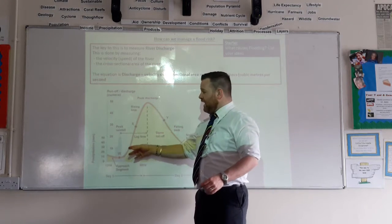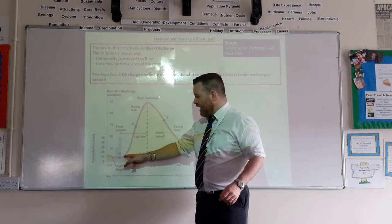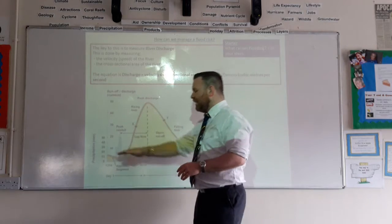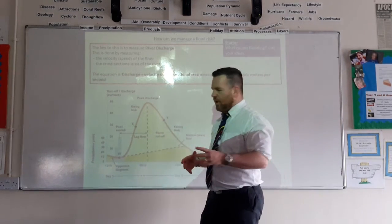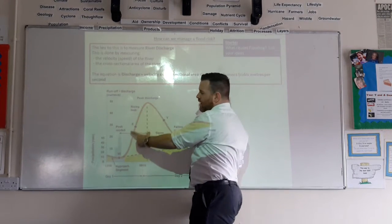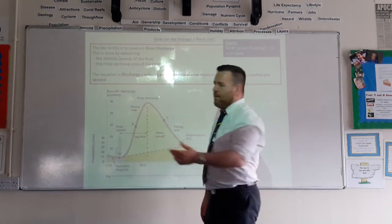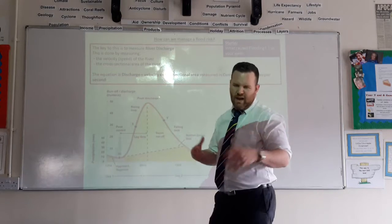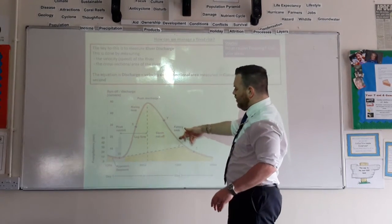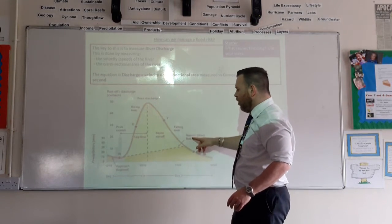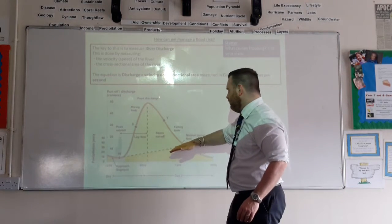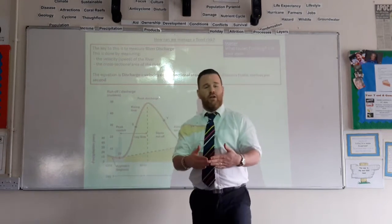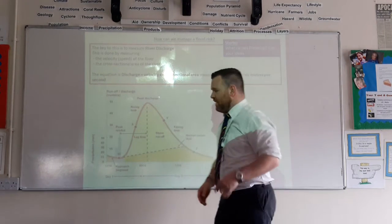Your rising limb is basically the river level increasing from a normal flow all the way up to peak discharge. When you've got a steep rising limb, that tells you that water enters the river quicker. When you've got a gentle rising limb, then water enters the river more slowly. Usually, where you've got a steep rising limb and a short lag time, you have a river which is prone to flooding. You've then got your falling limb, which is the other side, and that is your river returning to normal. Running along the dashed line, you've got your normal base flow — that's the normal flow of the river. We measure discharge in cubic metres per second — it's the amount of water flowing past one point of the river every second.